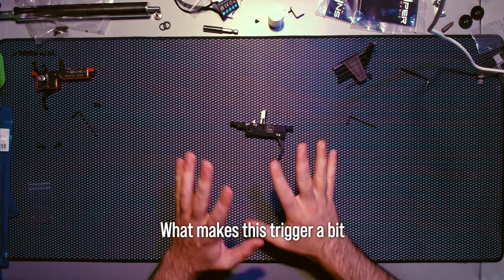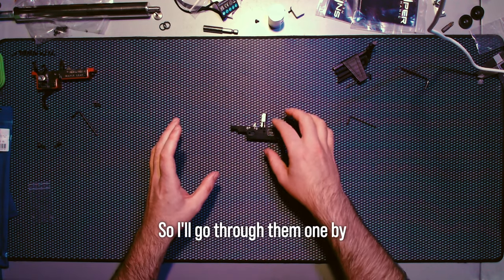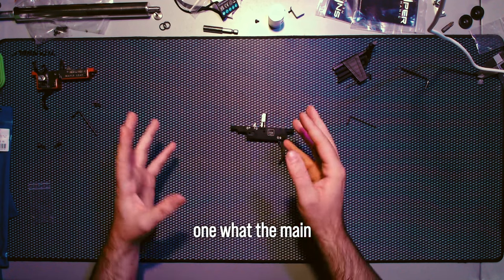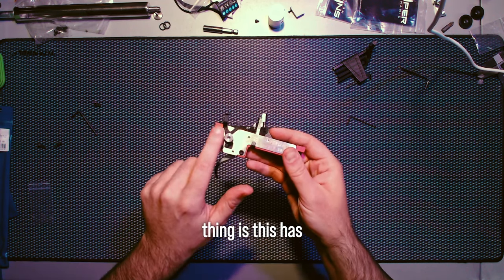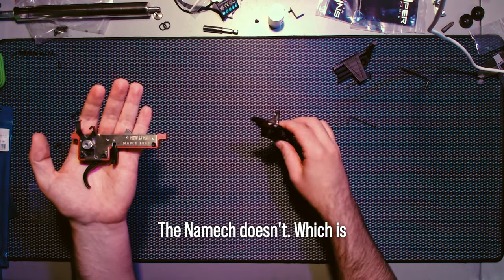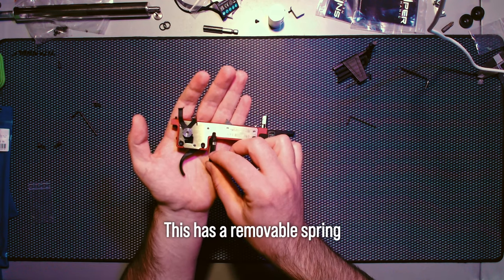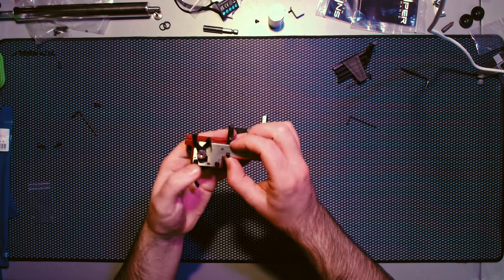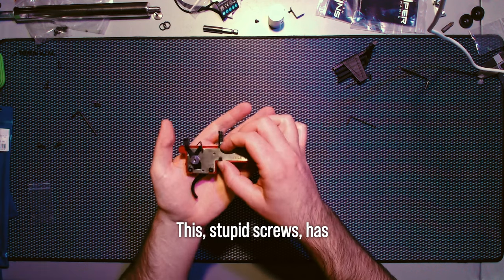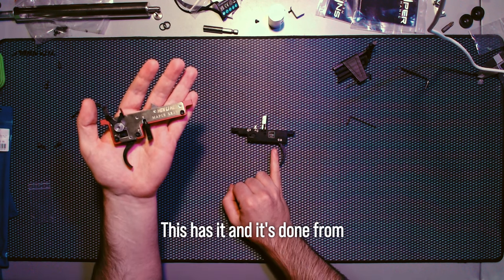What makes this trigger different? I've got a maple leaf 90 degree trigger here to compare. The very first thing is this has a safety, the Namek doesn't, which is fine most people remove it anyway. This has a removable spring guide stopper, this one doesn't. Both have adjustable trigger pull, done from different locations.